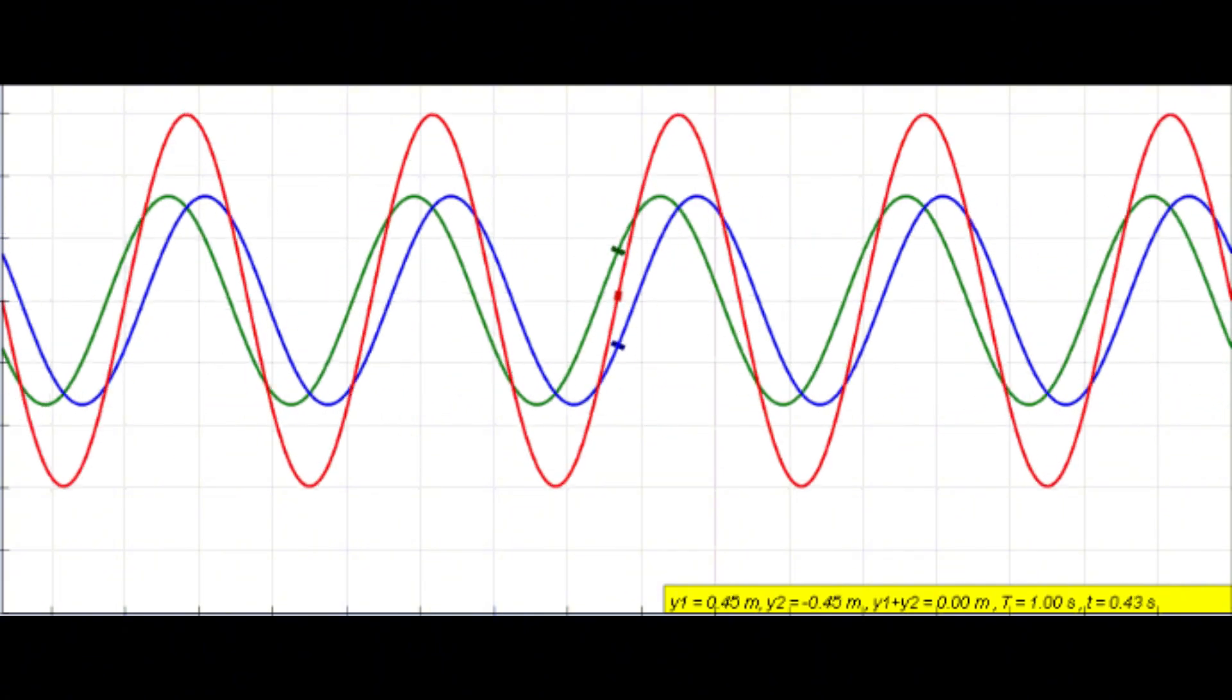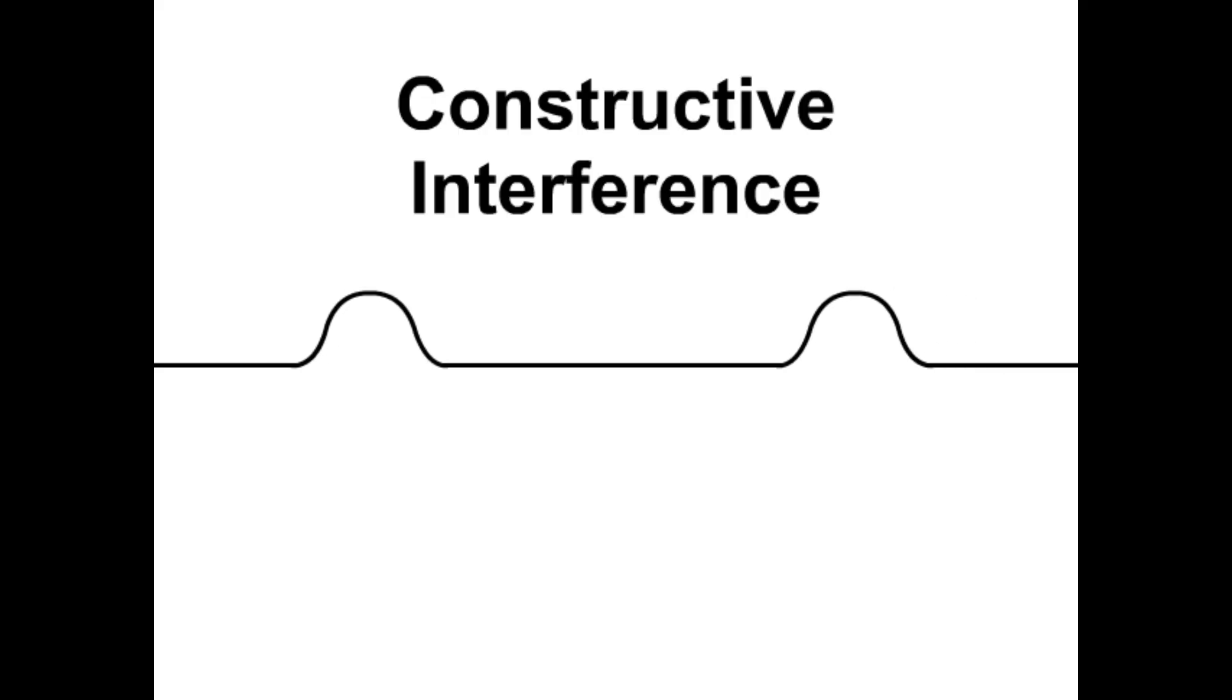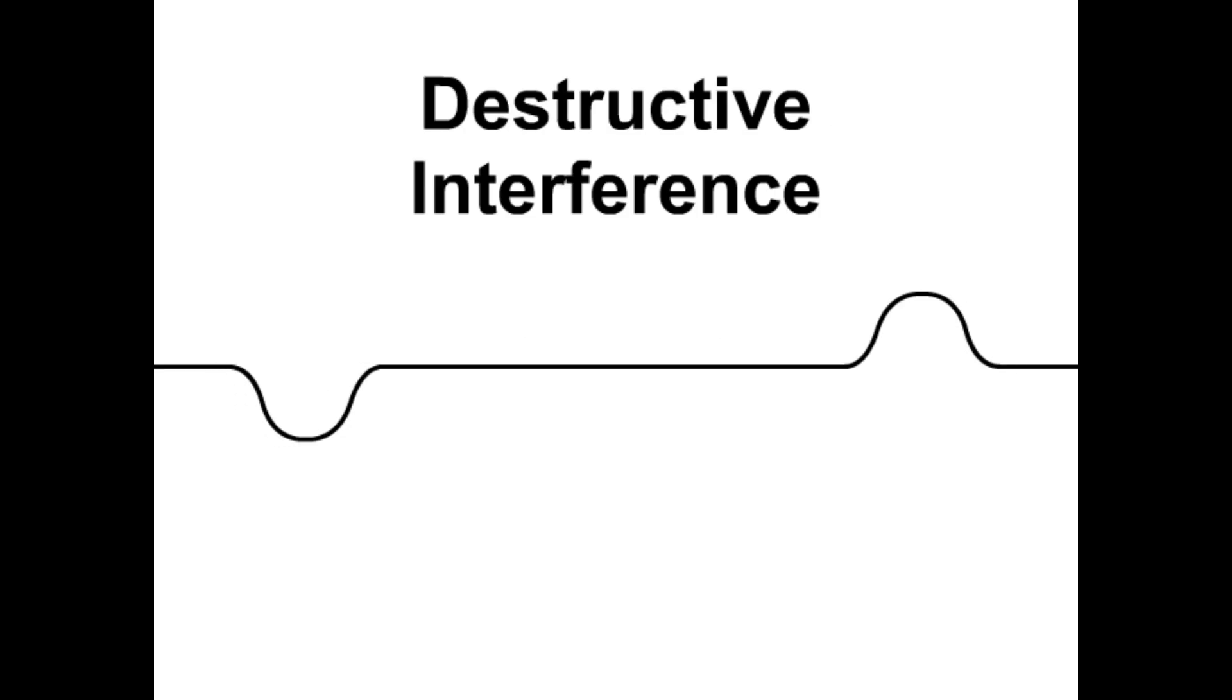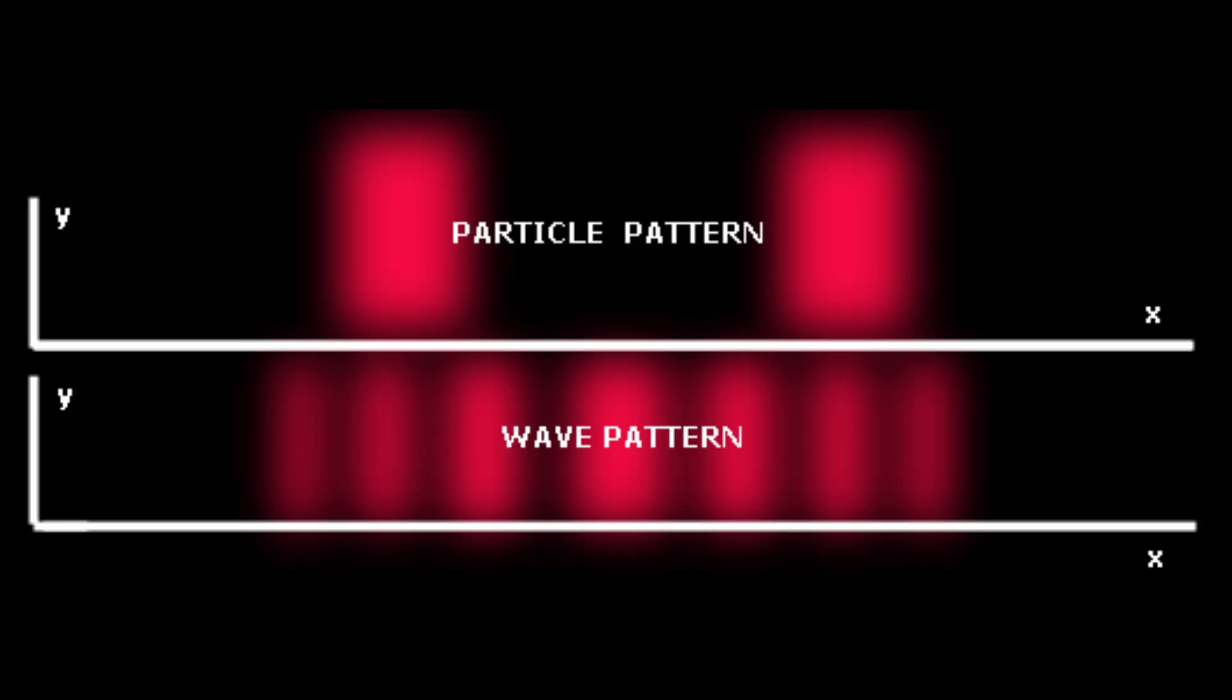When the two waves overlap, they can either add up or they can cancel out. This is called constructive and destructive interference. This produces a pattern of bright and dark bands, an interference pattern on the screen.